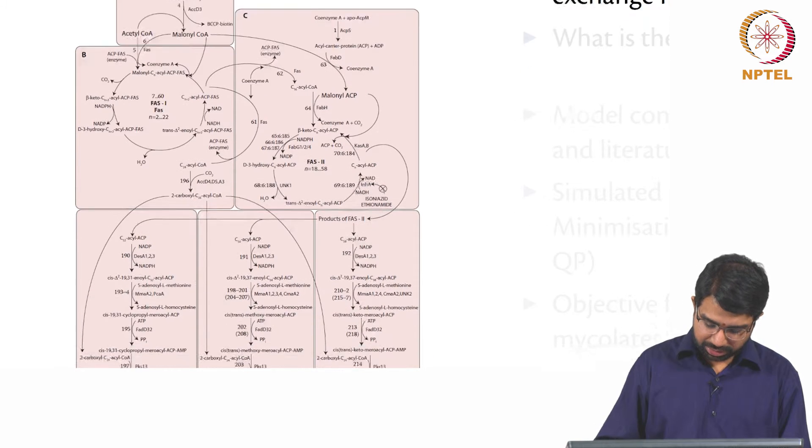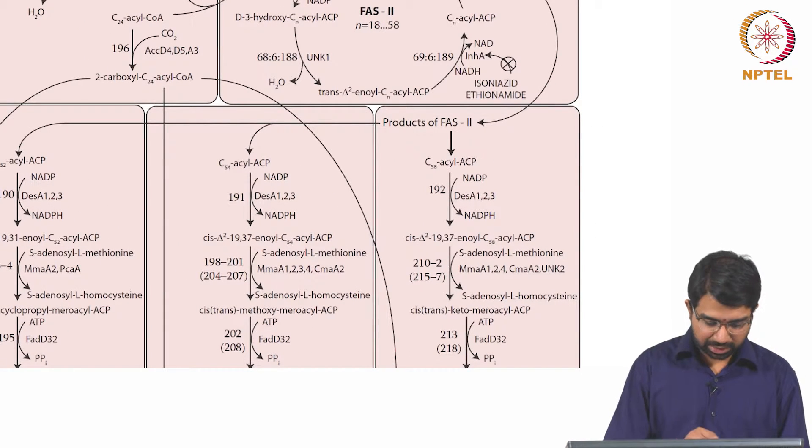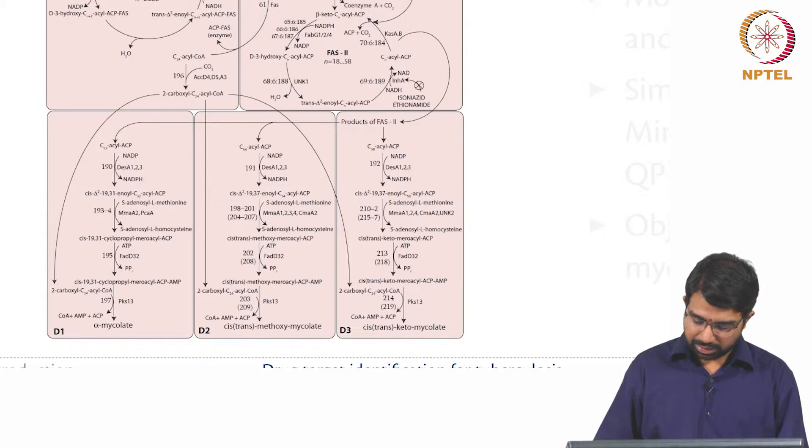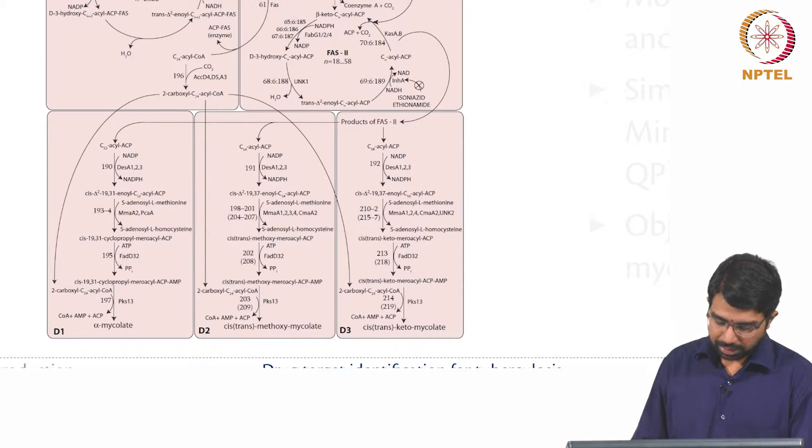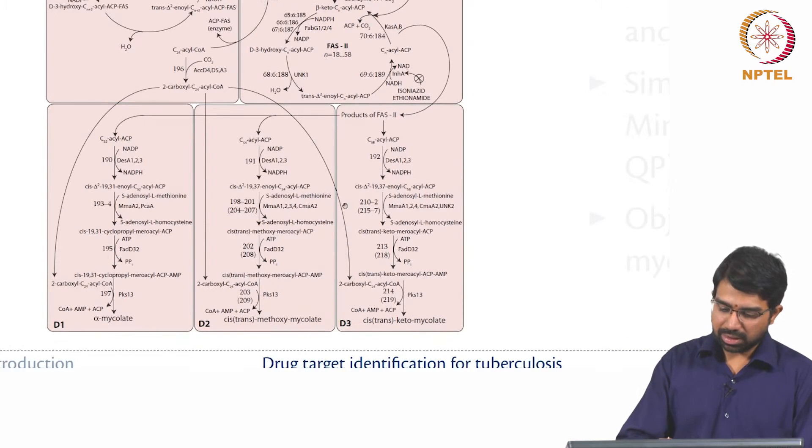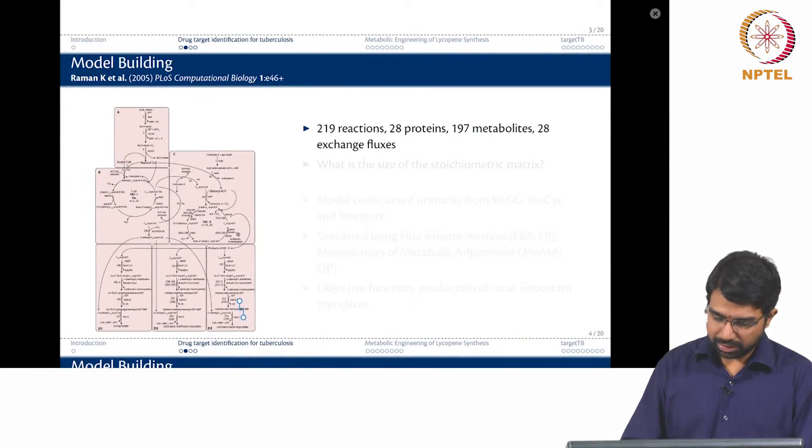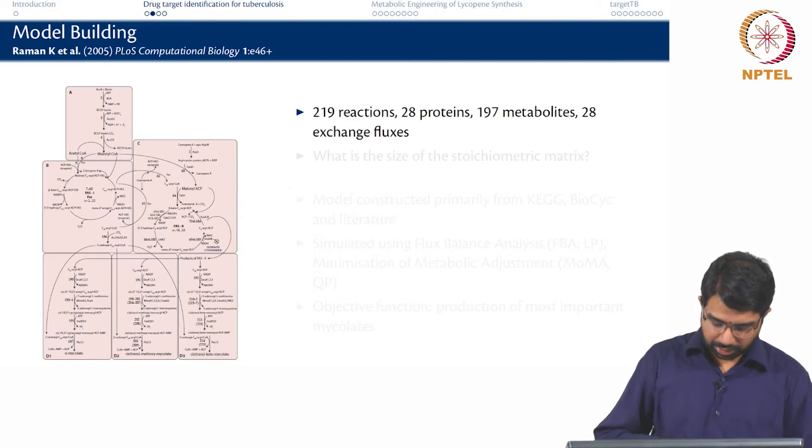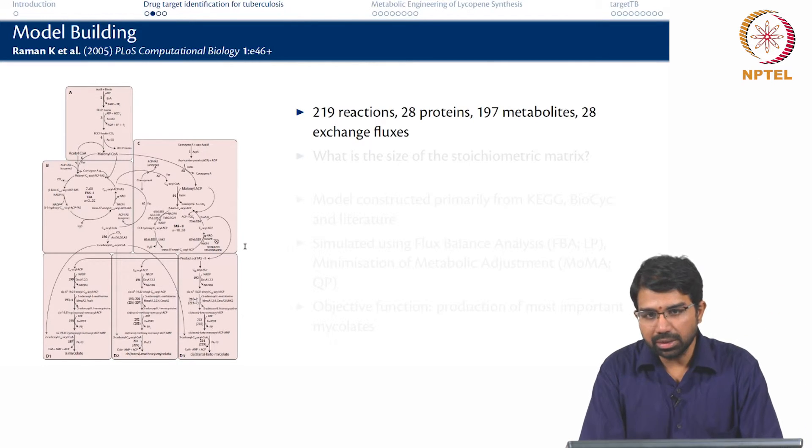And then finally there are some desaturations that act and create some double bonds and things like that. So you have something known as alpha-mycolate, methoxy-mycolate, cis-keto-mycolate and trans-methoxy-mycolate and trans-keto-mycolate. There are five different mycolic acids that are present in mycobacterium tuberculosis. And if you see there is a reaction here which involves the protein InhA which is the target for known drugs such as isoniazid and ethionamide. So this pathway is already the target for known TB drugs.